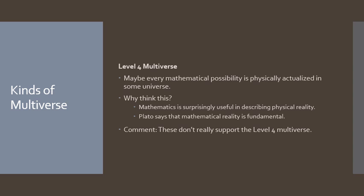Now my own comment is I think he's kind of gone off the deep end at this point and I think these arguments don't actually support the level 4 multiverse. The fact that mathematics is surprisingly useful in describing physical reality doesn't require that all mathematical possibilities are realized. It just requires that only mathematical possibilities are realized. In other words, only the things that are consistent with some mathematical system are realized. That doesn't mean everything that's consistent with a mathematical system is realized.